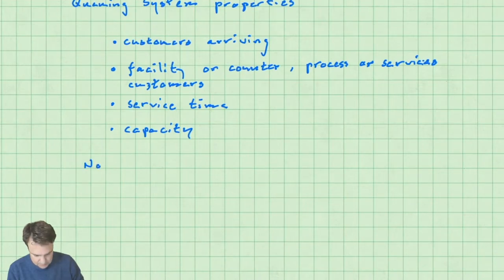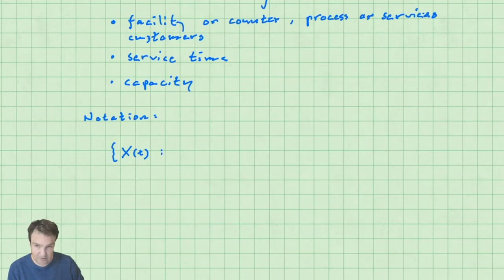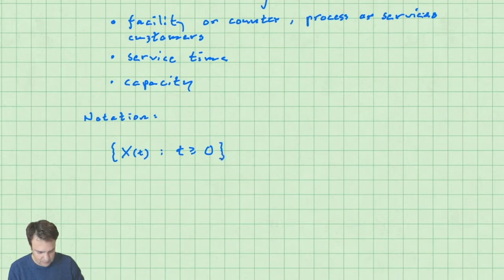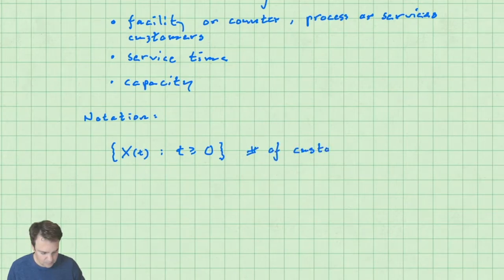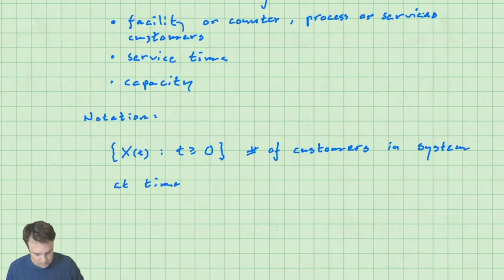The notation we're going to use: X(t) is the number of customers in the system. This is going to be a Markov process for us — a continuous-time process with t greater than or equal to zero. The number of customers in the system at time t has two pieces: the customers who are being served and the customers who are waiting to be served.